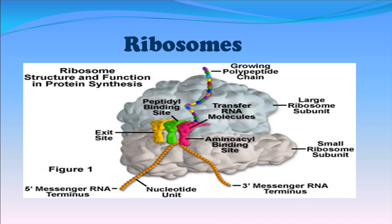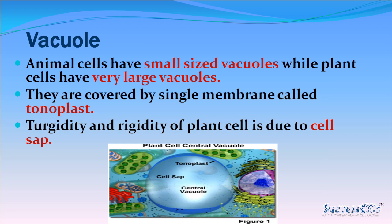Ribosomes are structures involved in protein synthesis. Regarding vacuoles: animal cells have small-sized vacuoles, while plant cells have very large vacuoles. Vacuoles are covered by a single membrane called the tonoplast. The turgidity and rigidity of plant cells is due to cell sap.